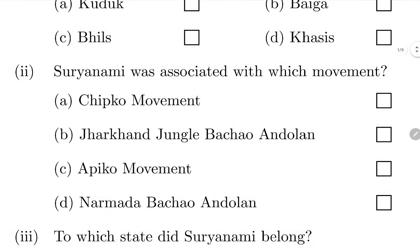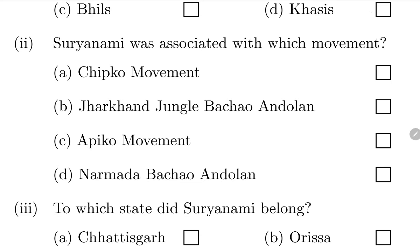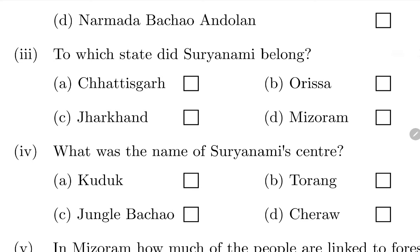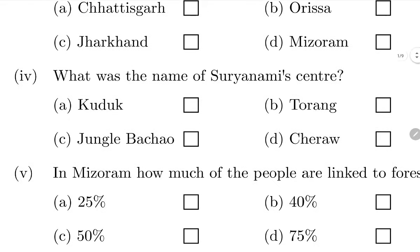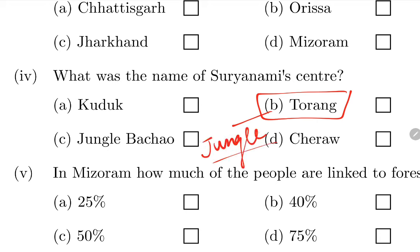Suryamani was associated with which movement? The name of the center Suryamani opened was Torang. In Kuduk language, Torang means jungle. Suryamani belonged to the state whose capital is Raipur - that is Chhattisgarh.